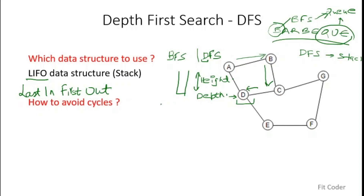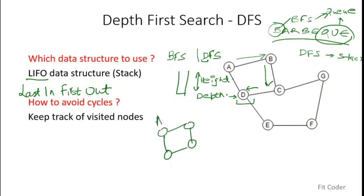Once we know which data structure to use, the next question is how to avoid cycles. To avoid cycles, we simply keep track of the nodes we have already visited using an array or a vector. For example, going A to B to C to D — if we don't track visited nodes, from D we go back to A, then to B again, creating a never-ending cycle. To avoid this, whenever we visit a node we record it. When we're at D and know A has already been visited, we skip that edge entirely.